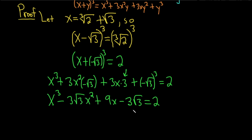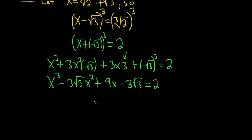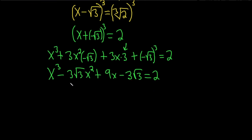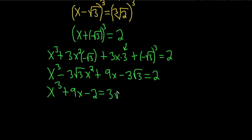We're not quite done because we still have square roots. Let's put everything that has a square root on one side by itself. So x cubed plus 9x minus 2 equals 3 root 3 · x squared plus 3 root 3.